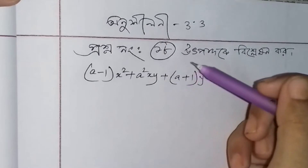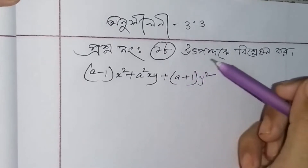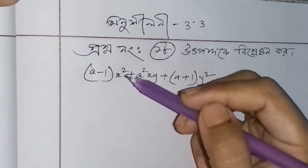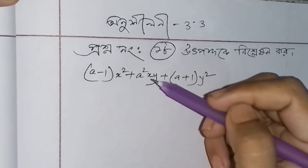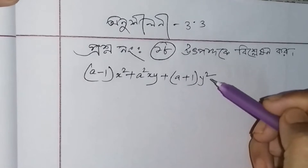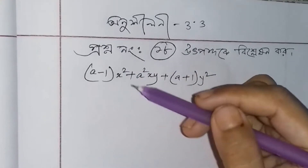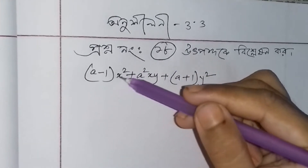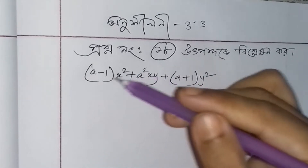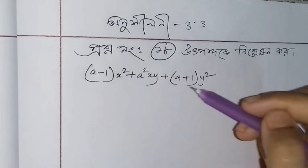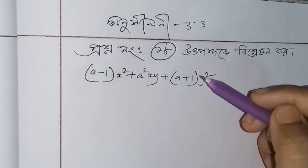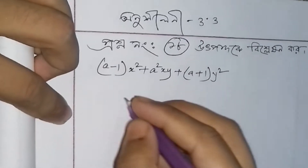Adhai 3.3, prashna nang 8-er samadhan gormu. Ekhana bolse jhe utpado ke bislation karo: (a minus 1) into x square plus a square xy plus (a plus 1) into y square. Toh a-ke dhuji bhavhe kara jay — aek bhavhe etak gund kore. Abar a minus 1 ke p dhormu, abar a plus 1 ke q dhormu. E bhavhe bho kora jay, toh samadhan shurru kori.